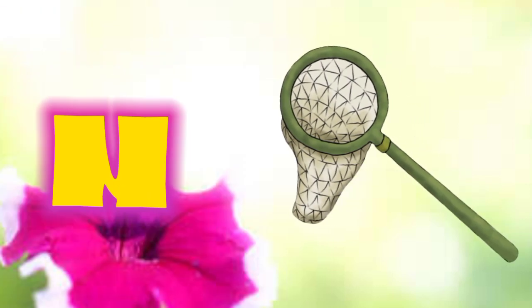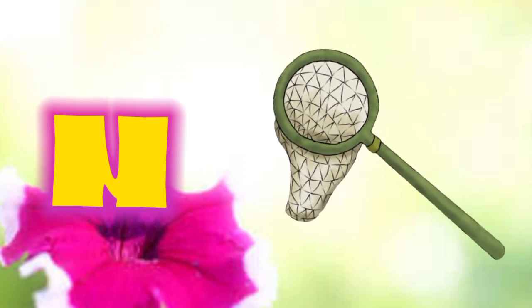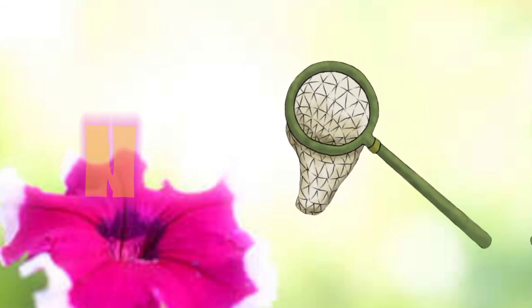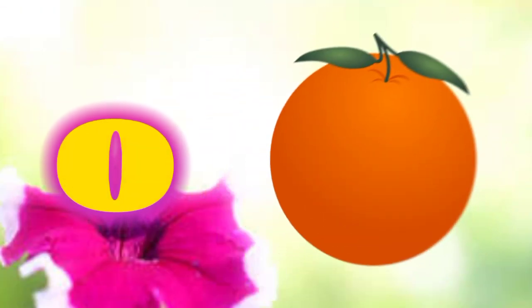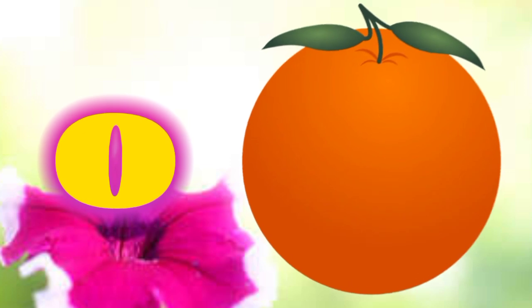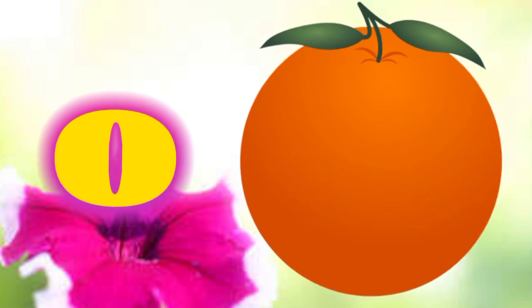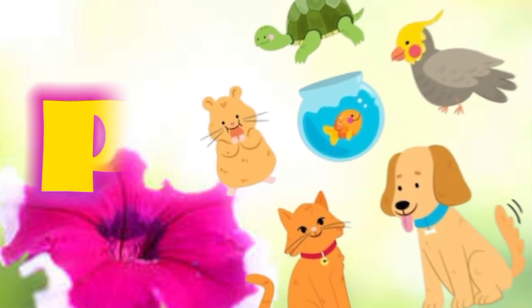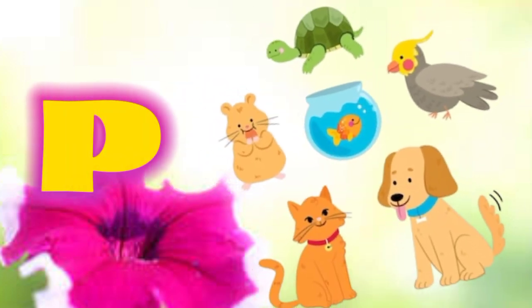M is for mat, m-m-mat. N is for net, n-n-net. O is for orange, o-o-orange. P is for pet, p-p-pet.